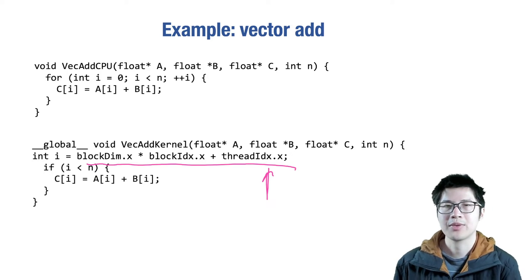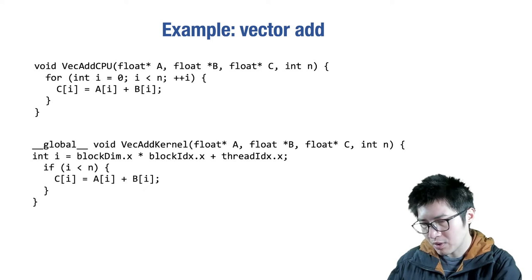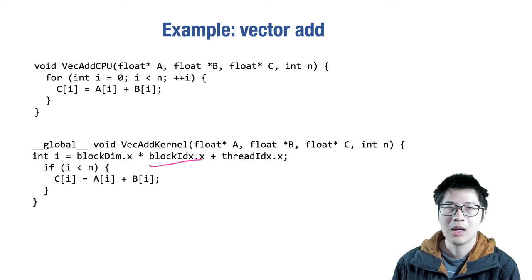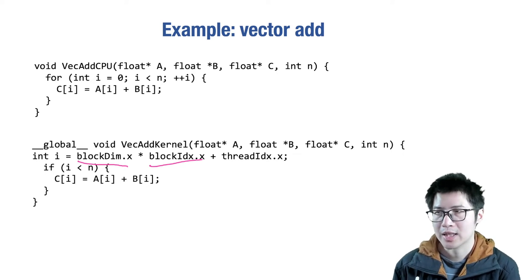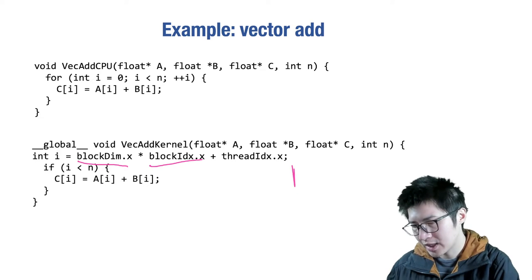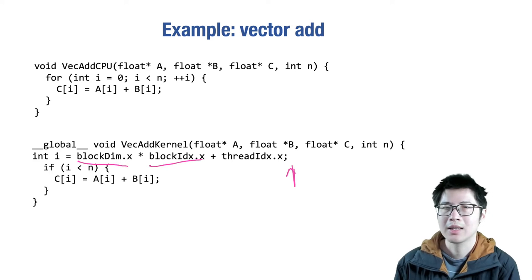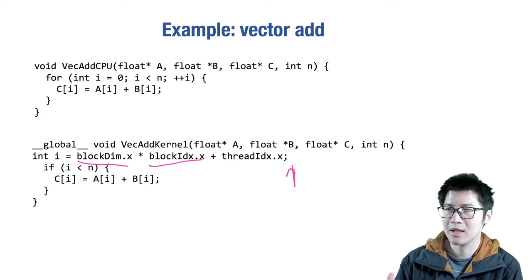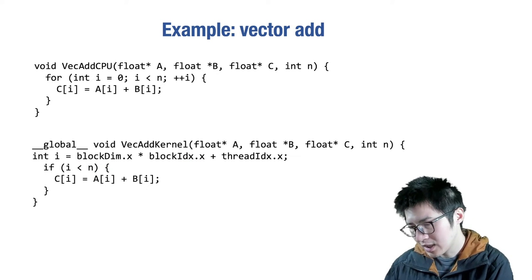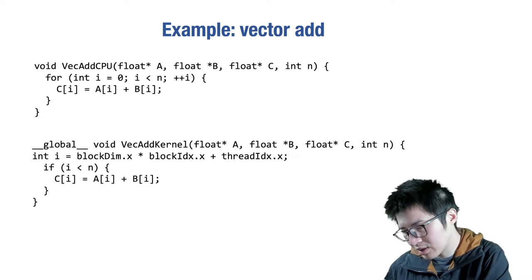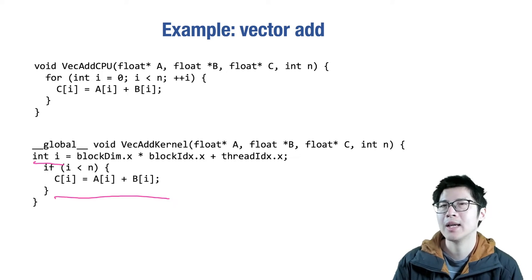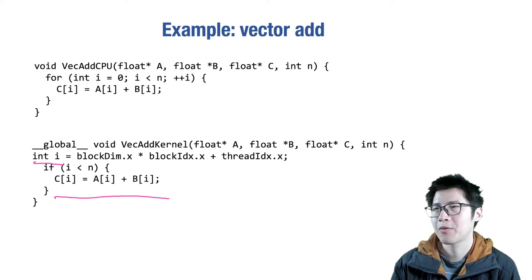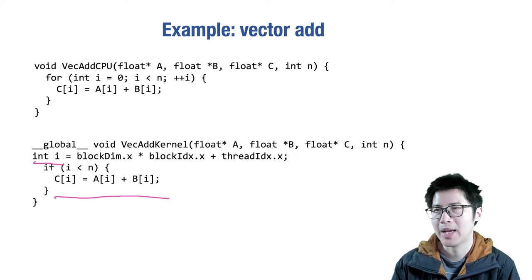The block dimension corresponds to the number of threads within a thread block. This computation gives you the global offset of the thread being launched. The code computes a global thread index, and then each thread performs just one computation: if the thread ID is smaller than the number of elements, it loads from A, loads from B, performs the addition, and writes the result back to C.